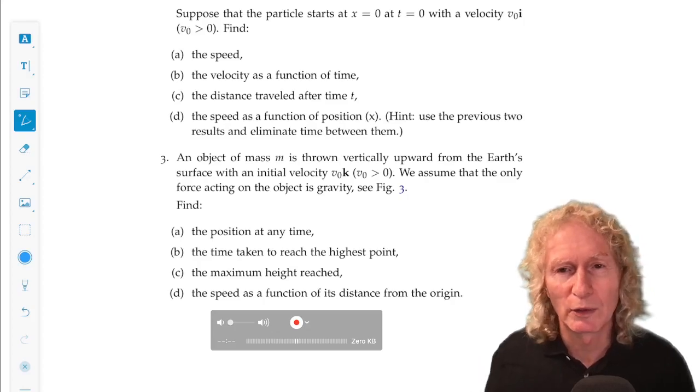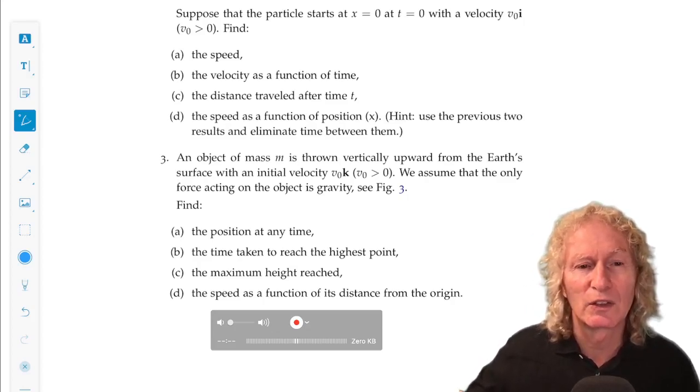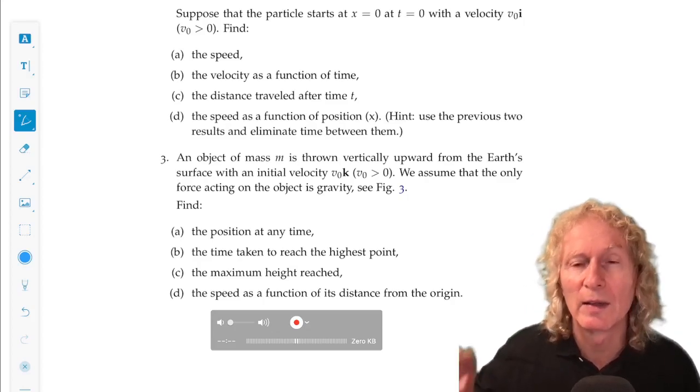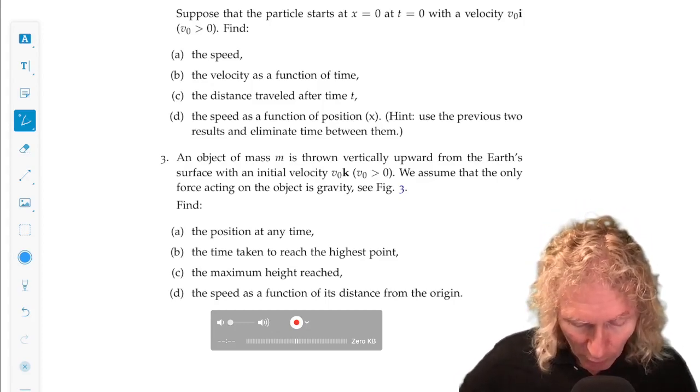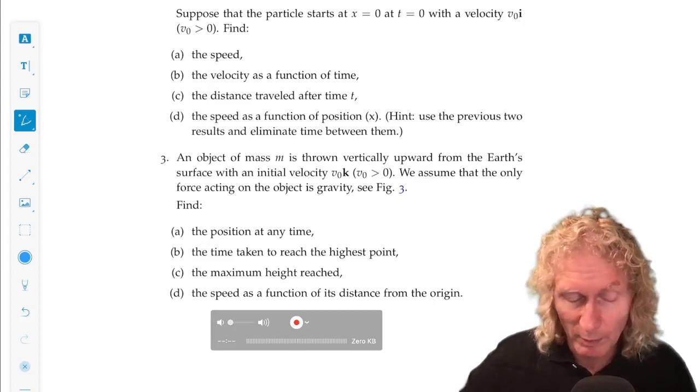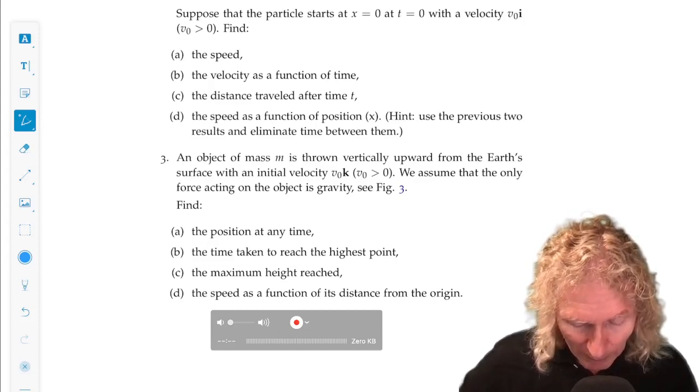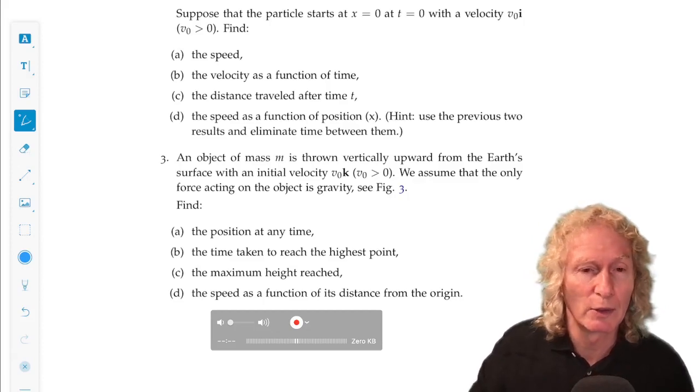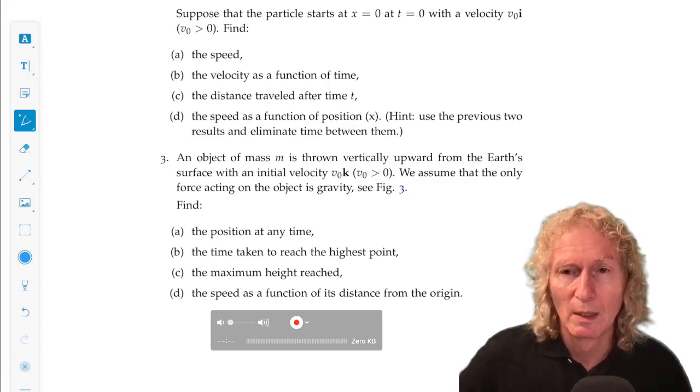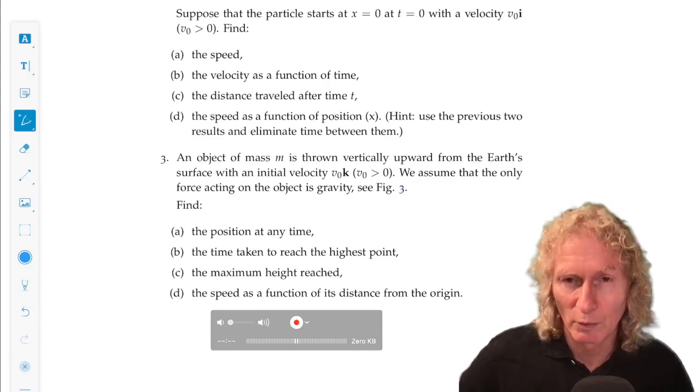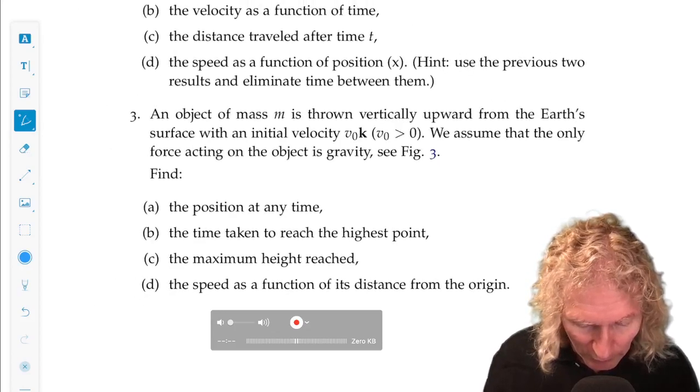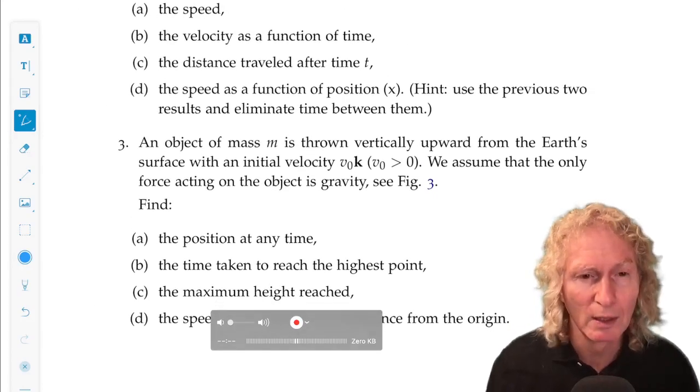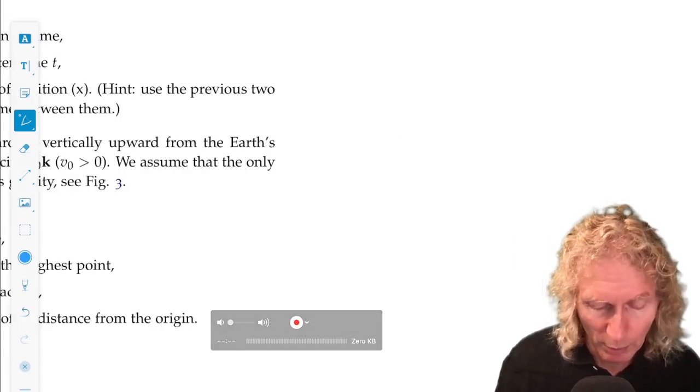The time taken to reach the highest point. What's the highest point? Well, it's going to go up and up and up, and it's going to stop when it can't go any higher. And that will be where its velocity is zero. And you'll be able to compute the time from the formula that we have. Maximum height reached, well, you have the right time, and you plug in the position, vertical position, as a function of the time it takes to reach the highest point. And then speed as a function of distance from the origin. Now that is exactly the same as part d from problem two.